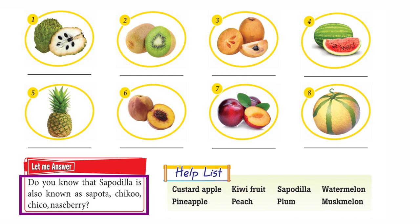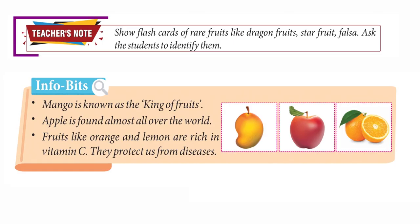Chapter 7: Fruit. Fruits are important for our life — it is nature's gift to us. We love to eat fruits because they are delicious and healthy. Check these pictures and write the names of fruits: custard apple, kiwi fruit, sapodilla, watermelon, pineapple, peach, plum, musk melon.